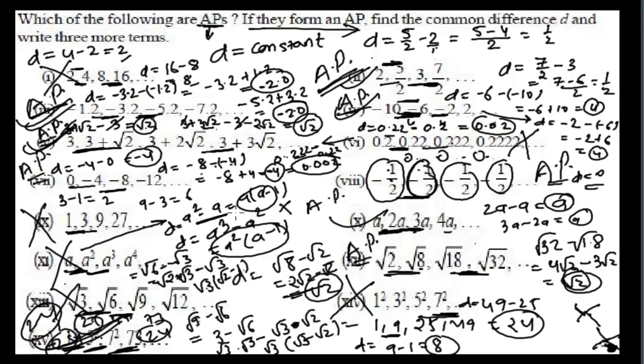We just need to check whether the common difference between the terms is the same everywhere. If the common difference is constant, the sequence is an arithmetic progression. If not, it is not an arithmetic progression. I hope you learned this properly and enjoyed the video. We'll meet in the next video with the next kind of problem. Bye-bye.